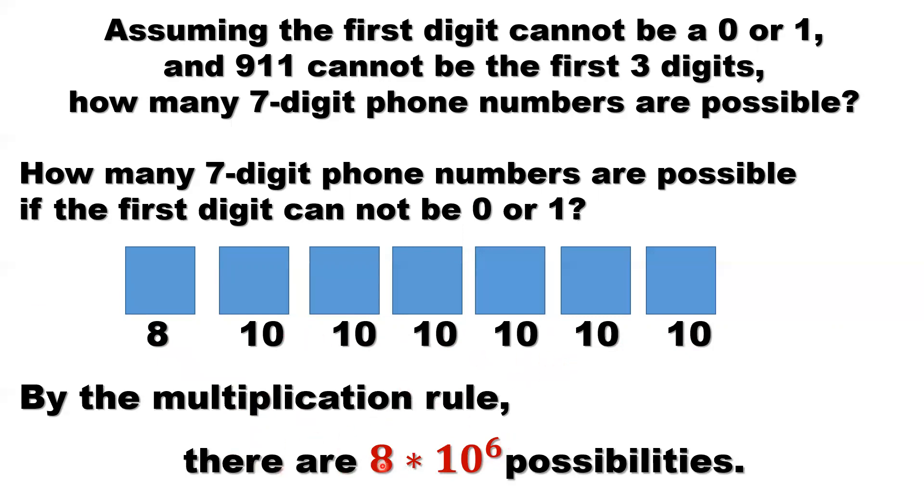There are this many possibilities for 7-digit phone numbers. The first one is not 0, not 1, but including 9. So 9-1-1 numbers are in this category.